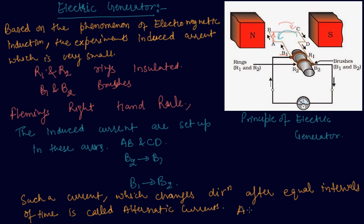This device is called an AC generator. To obtain direct current, a split ring commutator must be used. A commutator is used to give a steady DC current. This is how we get the DC current.